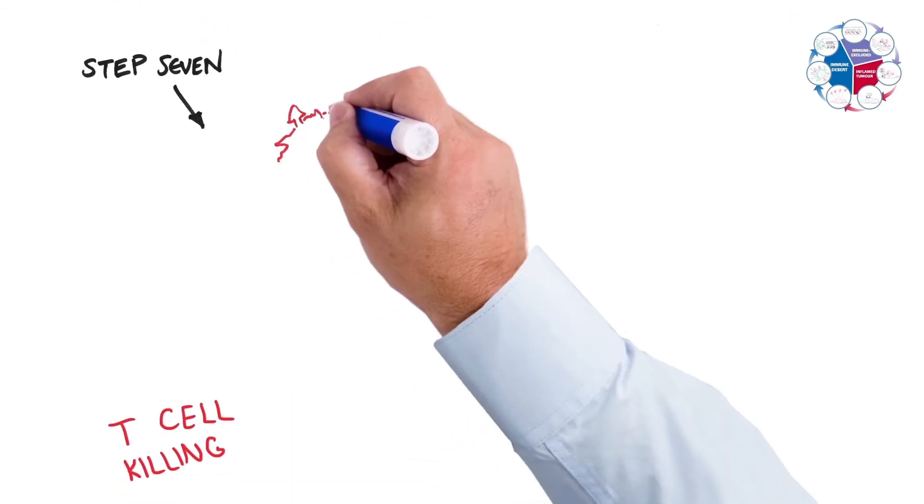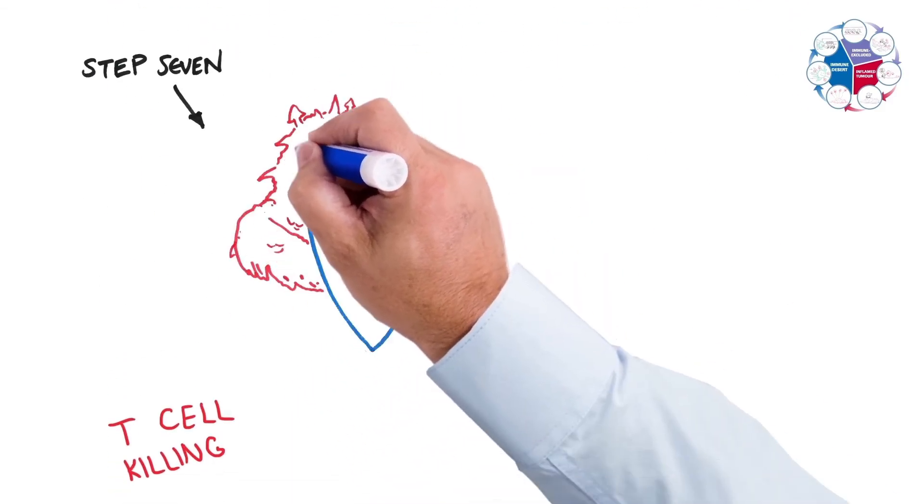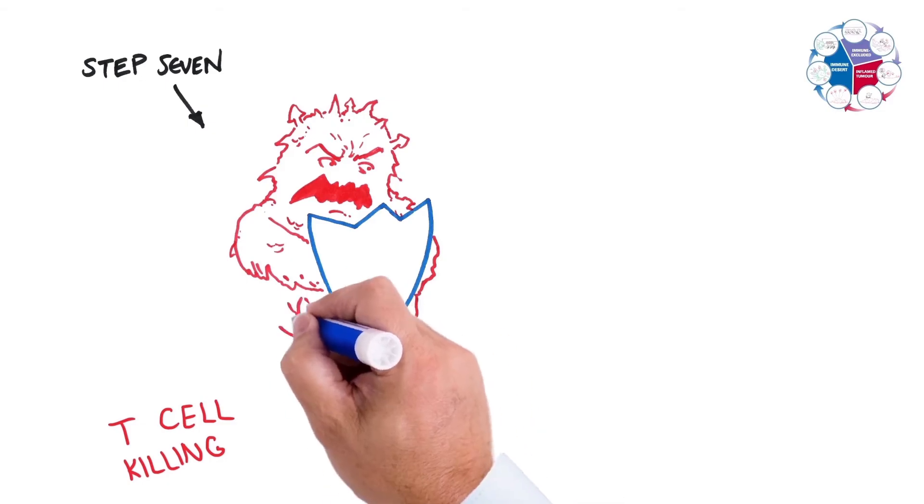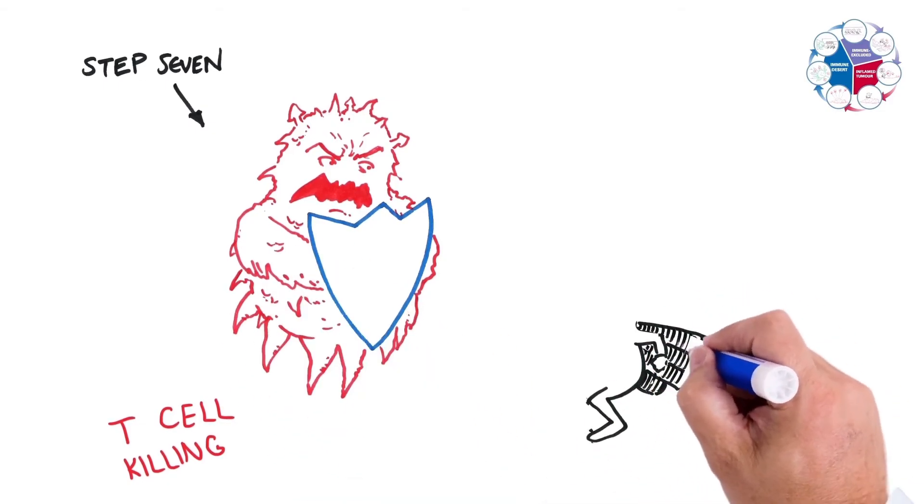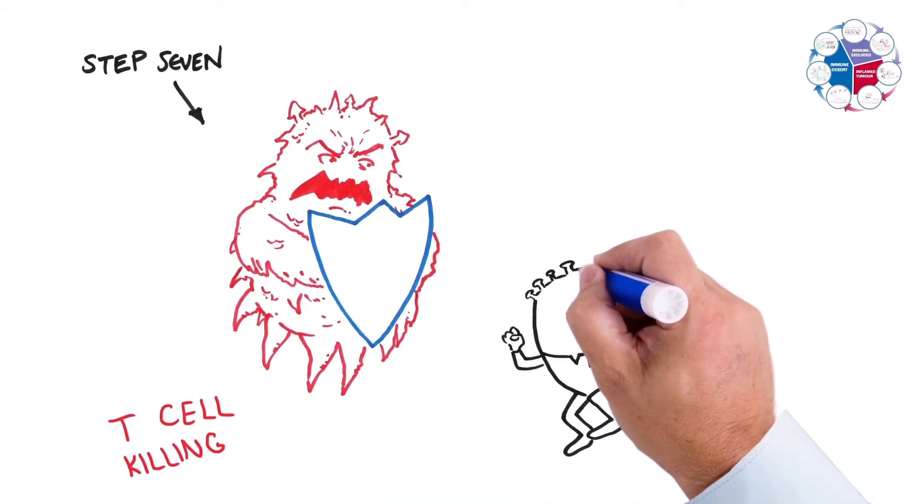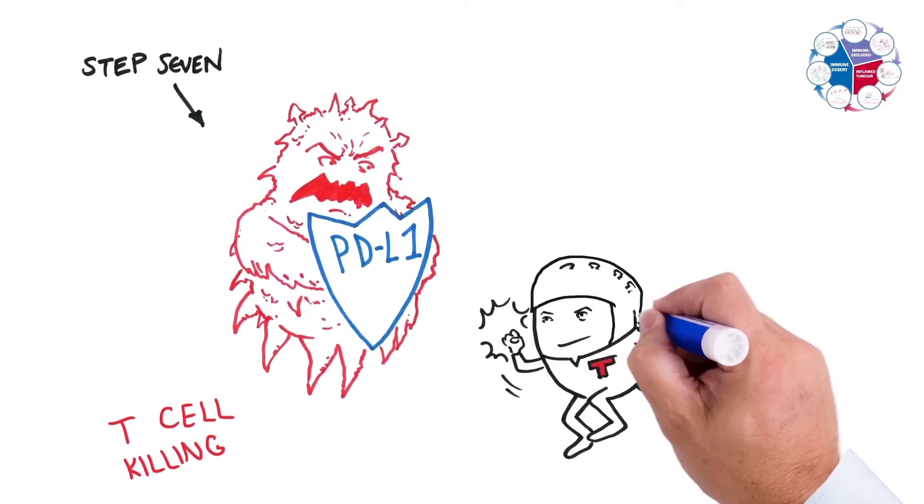And now we get to the ever important step seven. Step seven, an activated T cell has recognized a cancer cell, but now it actually has to kill that cancer cell. That's an important step.